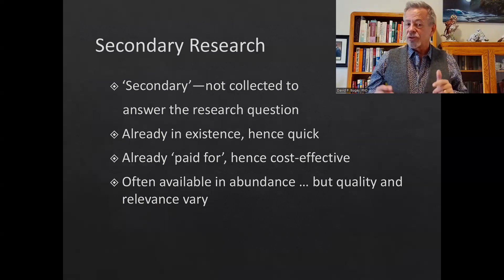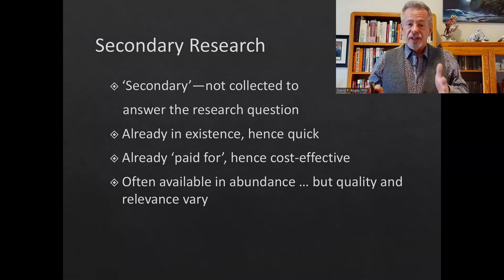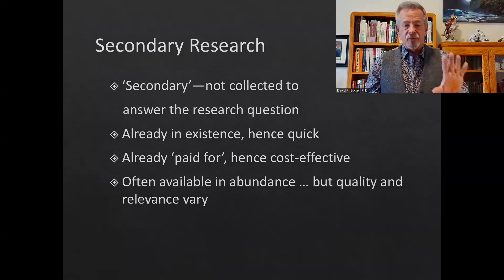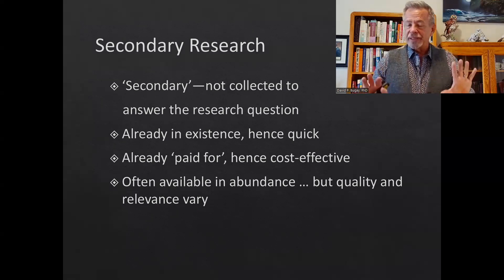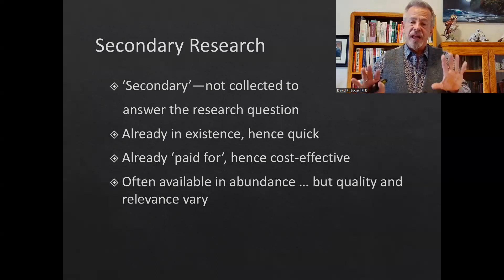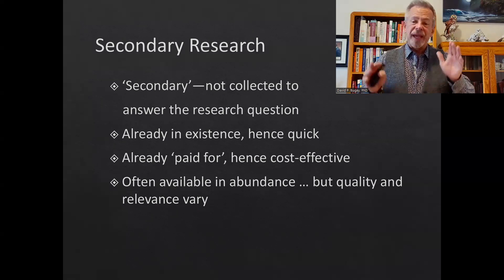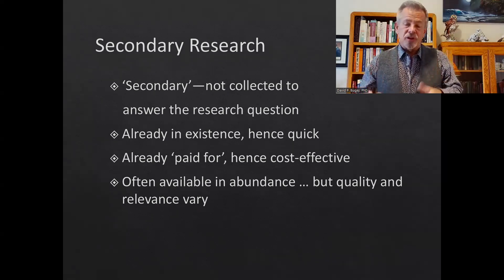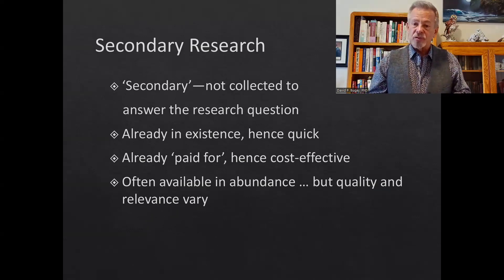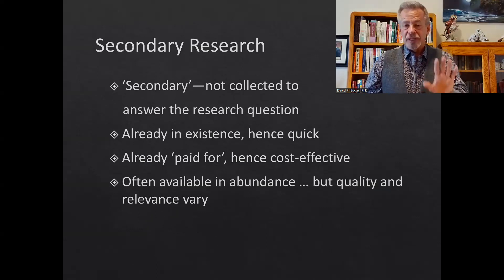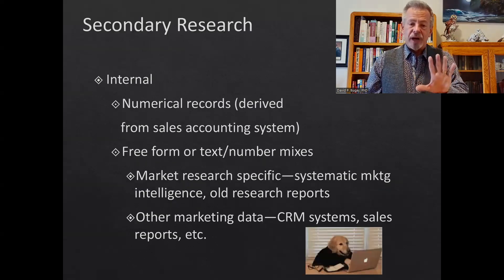You also have to pay attention to how you're going to research that group. Secondary research covers things already in existence — quick, already paid for, cost effective, available in abundance. It's available to you at almost no cost. You can pay a consultant a lot of money to research it, but you don't need to. Just get on your computer, put in the demographics you're looking for, and for a relatively cheap fee or no fee, you can find what your demographic is looking for.